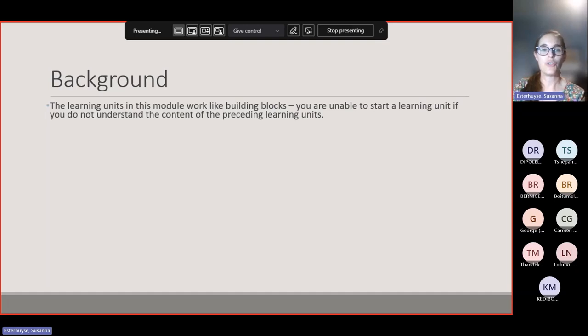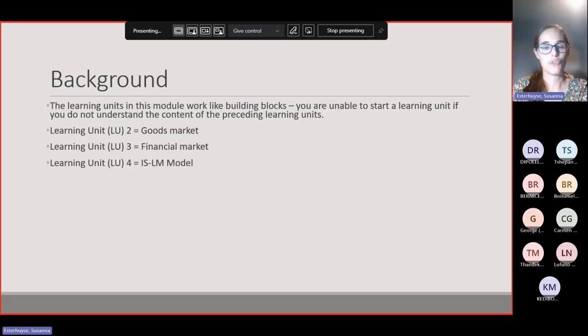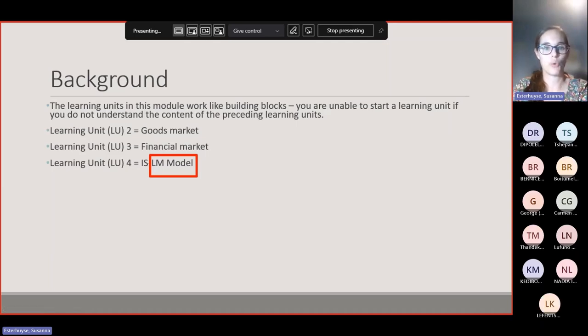The learning units in this module work like building blocks. You're unable to start a learning unit if you don't understand the content of the preceding unit. In Learning Unit 2, you did the goods market. In Learning Unit 3, you did the financial market. Now in Learning Unit 4, these two markets come together in the IS-LM model. Tonight we're supposed to be only looking at the LM model, but I'm going to do a bit of revision so we all know what's going on.